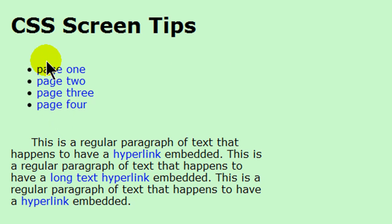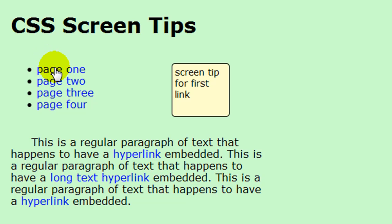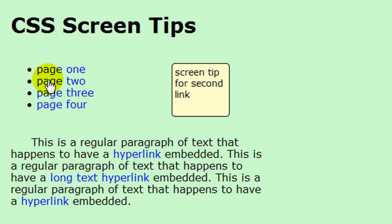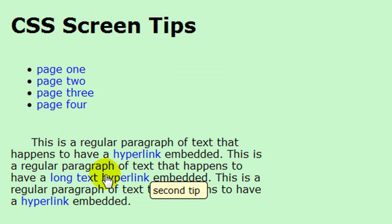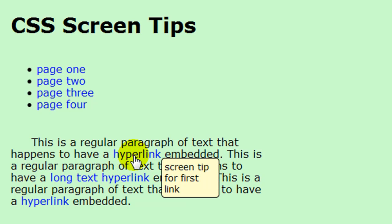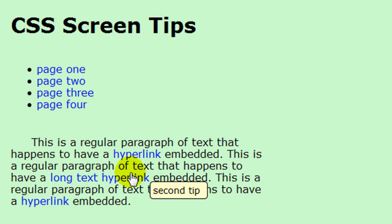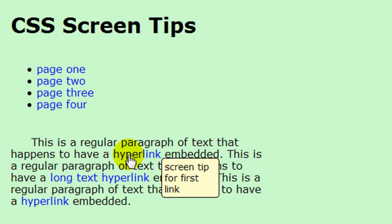So those are some CSS-powered screen tips. I've got a navigation menu that shows a screen tip for each of the menu items, positioned to the right of the unordered list which is about 300 to 400 pixels wide. I've also got screen tips on text within my paragraphs, positioned to the negative right of each hyperlink — going outside the hyperlink's right edge. CSS-powered screen tips.